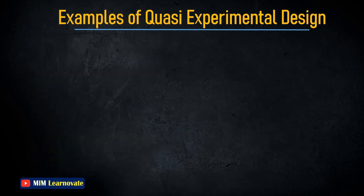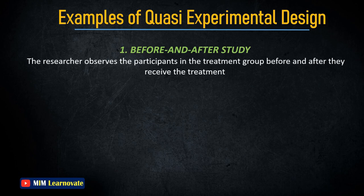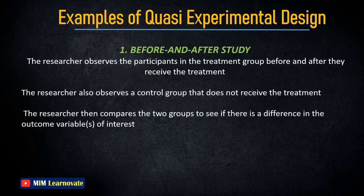Example of a Quasi-Experimental Design: One example is a Before and After Study. In a Before and After Study, the researcher observes the participants in the treatment group before and after they receive the treatment. The researcher also observes a control group that does not receive the treatment, then compares the two groups to see if there is a difference in the outcome variables of interest.